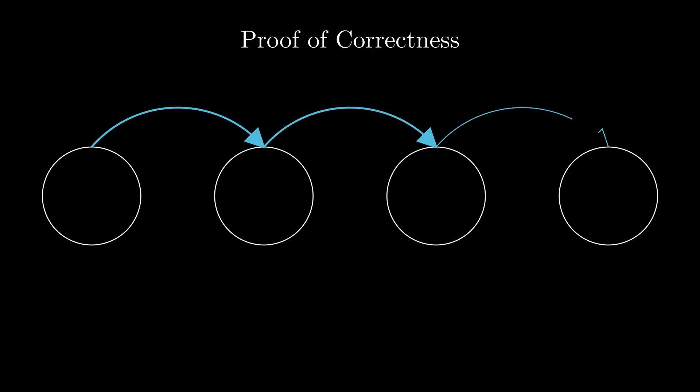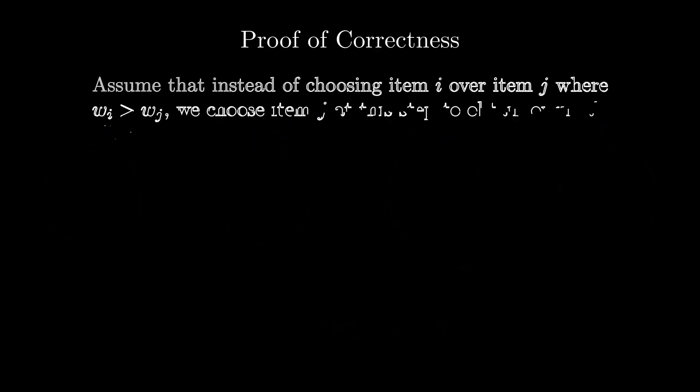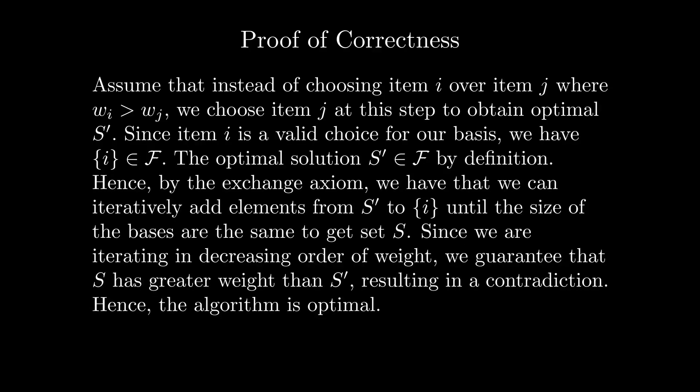We can prove that the solution constructed is optimal as follows. First, we must show that we will never need to perform more than one pass over every element in u when deciding whether or not to add it to the basis b. This is simple to prove, as if we were able to add an element that we previously skipped over to our basis, we would violate the hereditary axiom. Second, we now prove that iteratively choosing the highest weight element that can be added to b such that b is still in f produces a maximal weight basis.